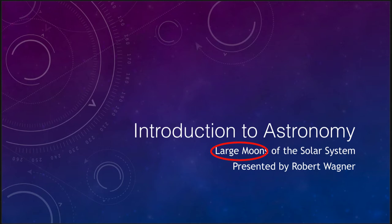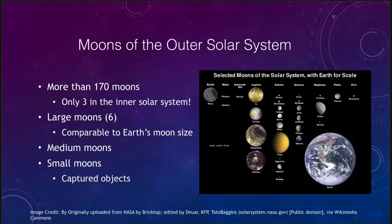There are a number of moons in the inner solar system — just three of them. In fact, there are more than 170 moons known in the solar system, and of those three are in the inner solar system: around Mercury, Venus, Earth, and Mars. The inner solar system ones include the Earth's moon and the two small moons around Mars.